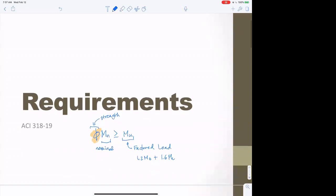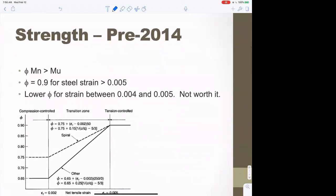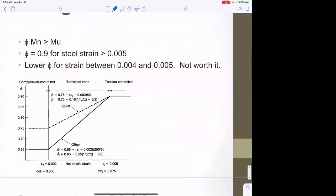What I want to talk about right now is that phi factor. Traditionally, for moment, φ equals 0.9, and that's changed over the years. Let's talk about that. Pre-2014, this was the phi factor.